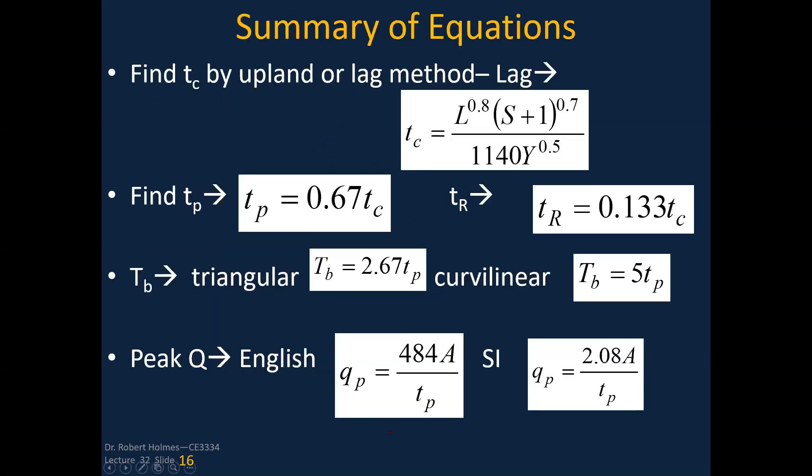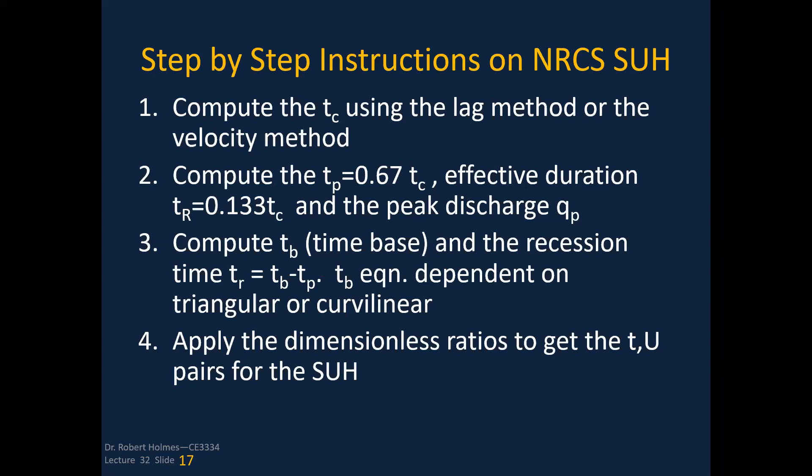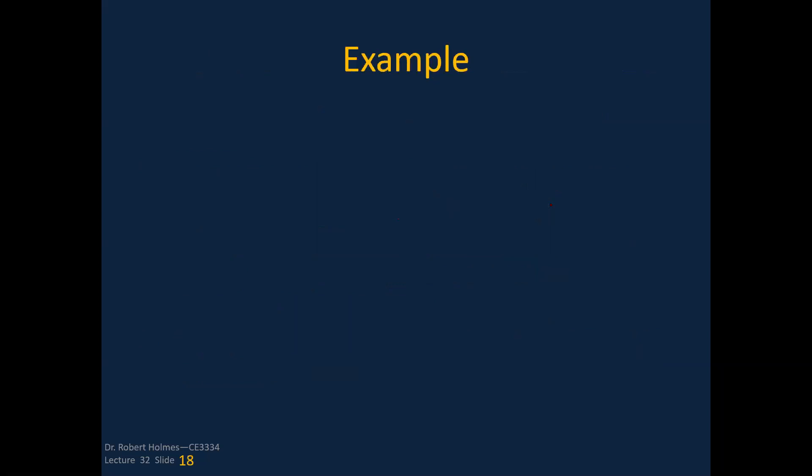This is just a summary slide that tells you the steps. You can go through this on your own. Make sure you've got it straight. Here's some step-by-step instructions. First thing you're going to do is compute the T_c, and then you get the T_p from that and the effective duration. Then you're going to get your time to base, and then you're going to calculate your dimensionless ratios. Based on that, you got the Q_p there and you're ready to go.